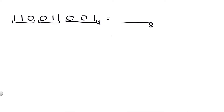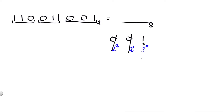Converting the first group, 001 — the positional value of 1 is two raised to zero. Since the other two digits are zeros, we cancel them. So 1 × 2⁰ = 1. Thus 001 is equivalent to 1 octal.